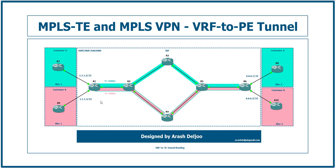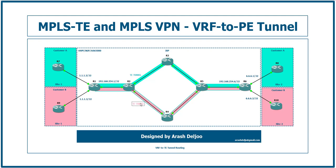It is straightforward to configure two TE tunnels, and with the method learned in the previous scenario we can forward traffic into the TE tunnel. But what is the problem? The IP address of Router 6 that we use for establishing BGP neighborship is 192.168.254.6/32. On Router 1, the address is 192.168.254.1/32. This is the IP address used for establishing BGP neighborship between Router 1 and Router 6.